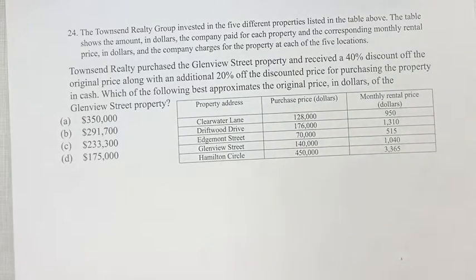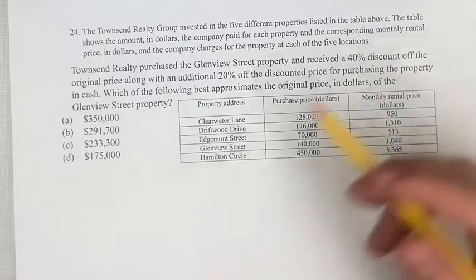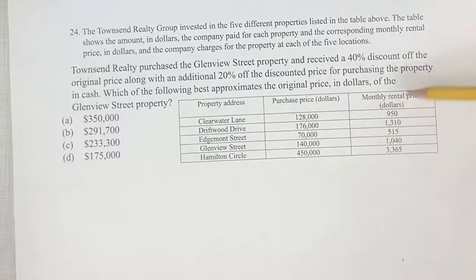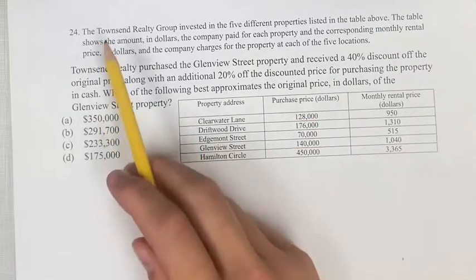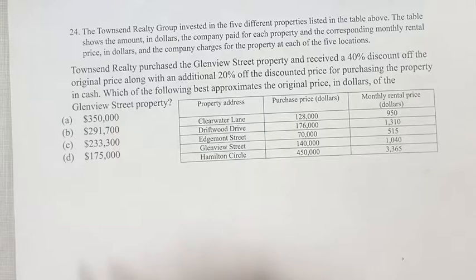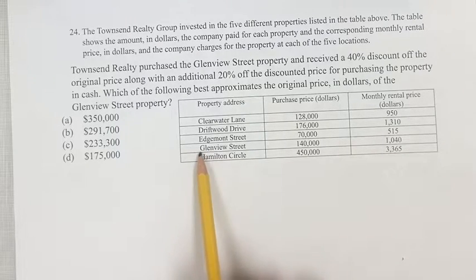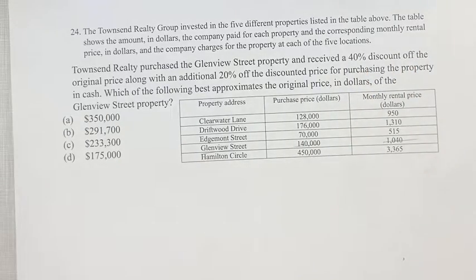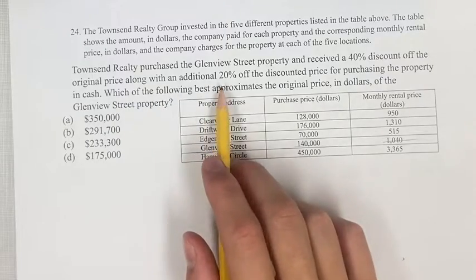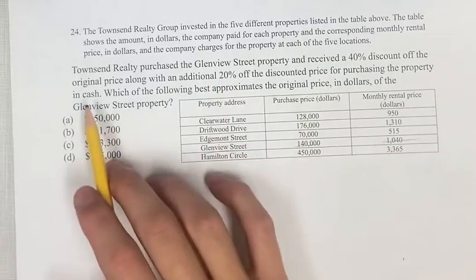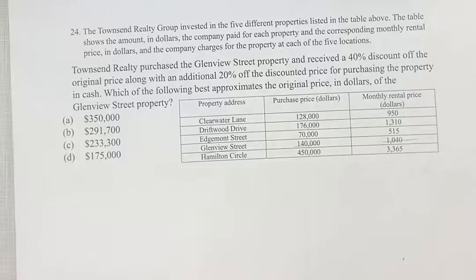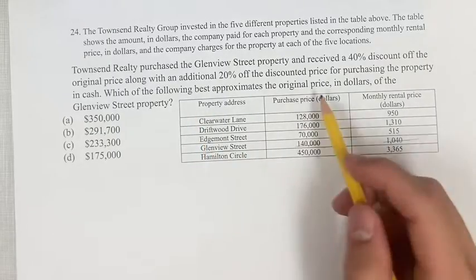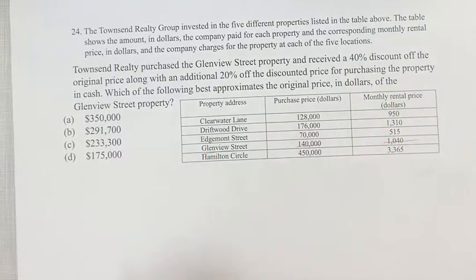Hello and welcome back to another video. In this problem, we're given the purchasing prices and rental prices of five properties that the Townsend Realty Group is invested in. We're told that they purchased the Glendrew Street property, which is this one right here, and received a 40% discount off the original price, with an additional 20% off that price for purchasing the property in cash. We're asked which of the following best approximates the original price in dollars of this property.